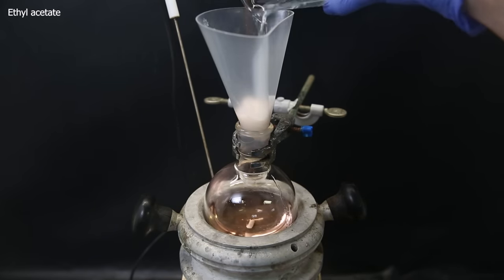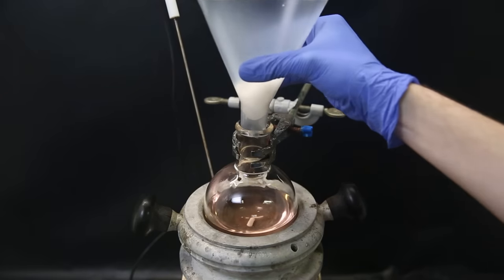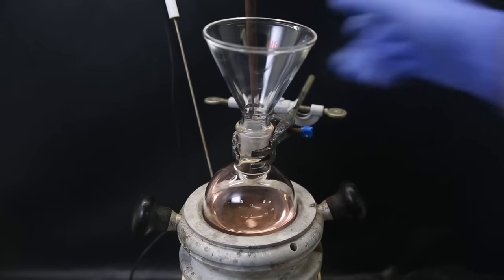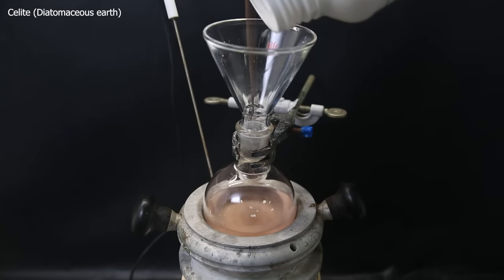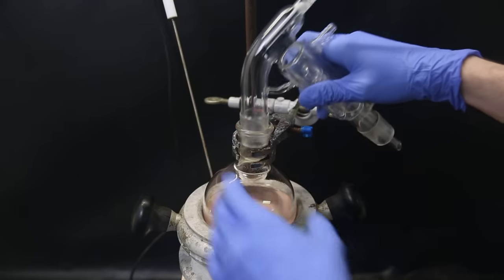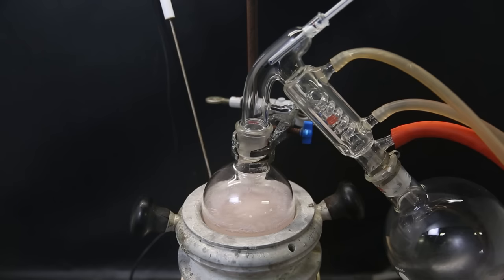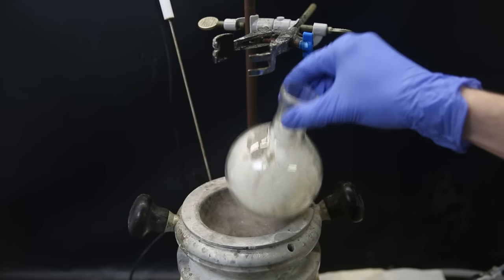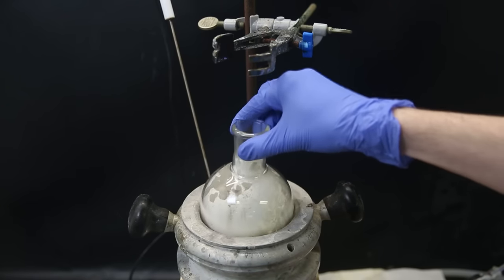I also wash it down with a bit more ethyl acetate. I then attach a funnel, and like the first synthesis, I add some Celite to the solution to get a powder that is easily handled. I then distill off all of the solvent, and I am left with a dry powder that contains the product. The powder comes loose easily, and I just scraped it with a spatula to get it all down.